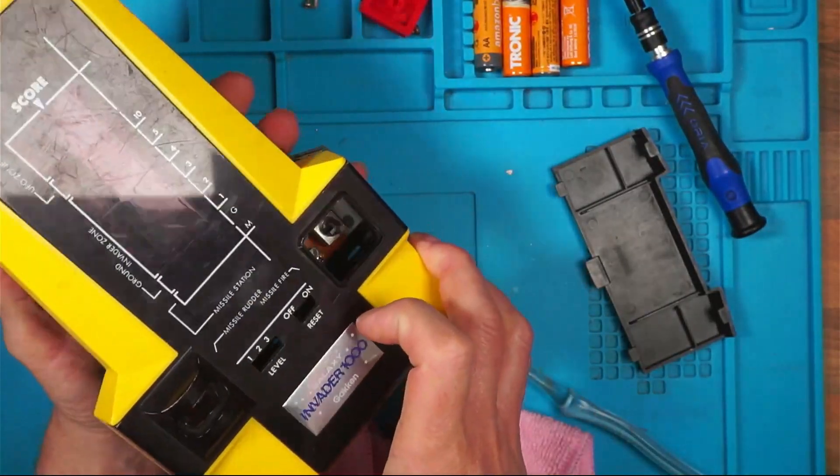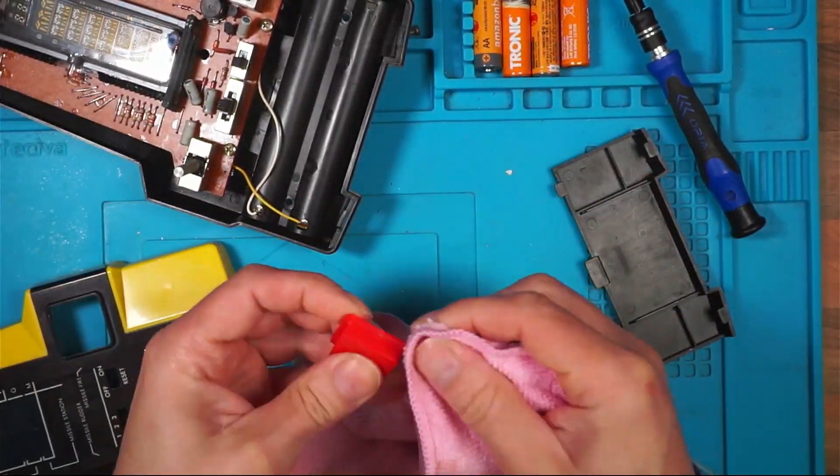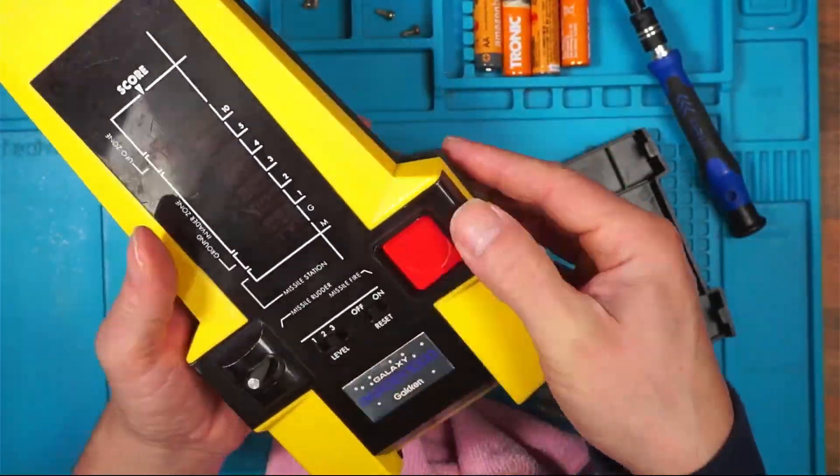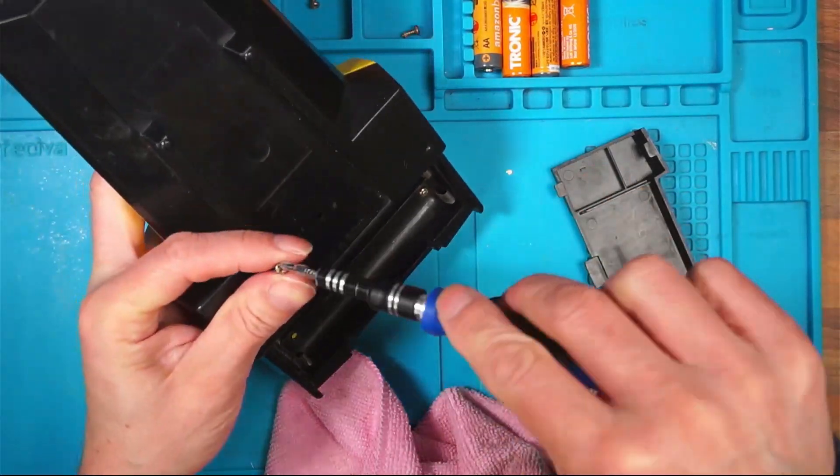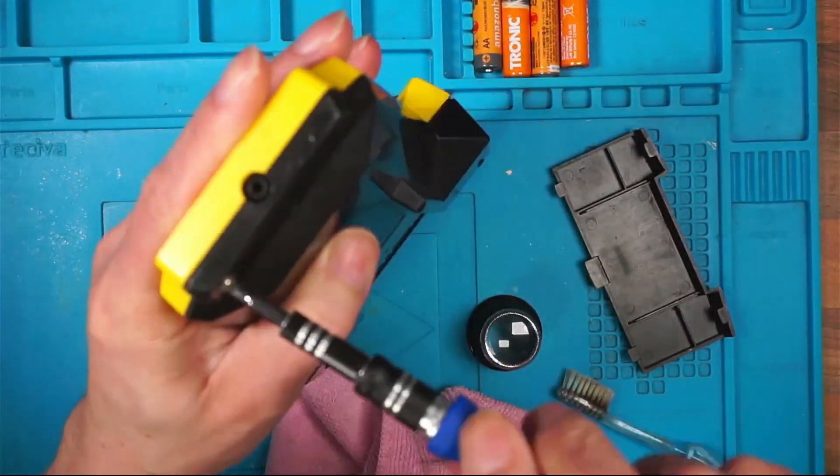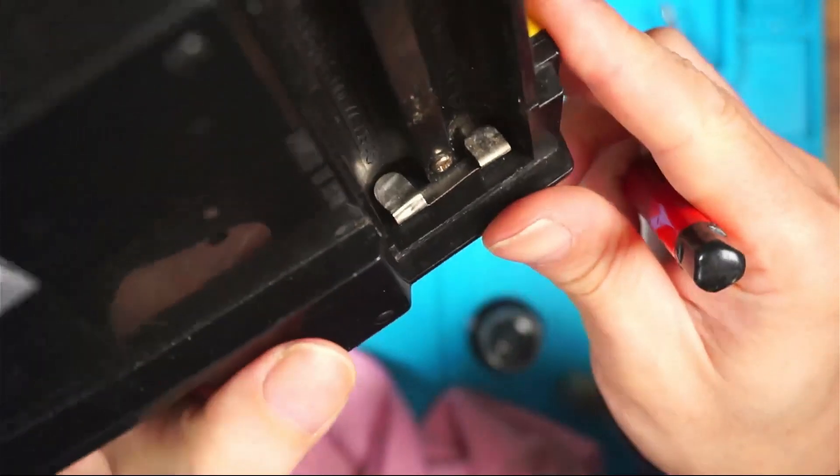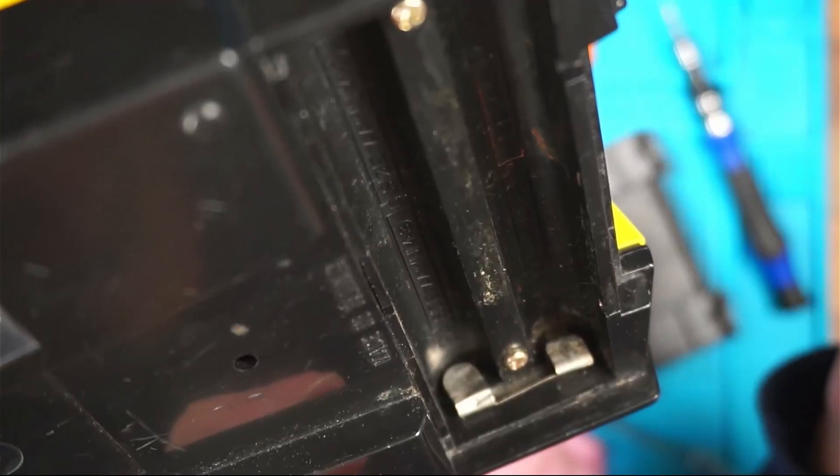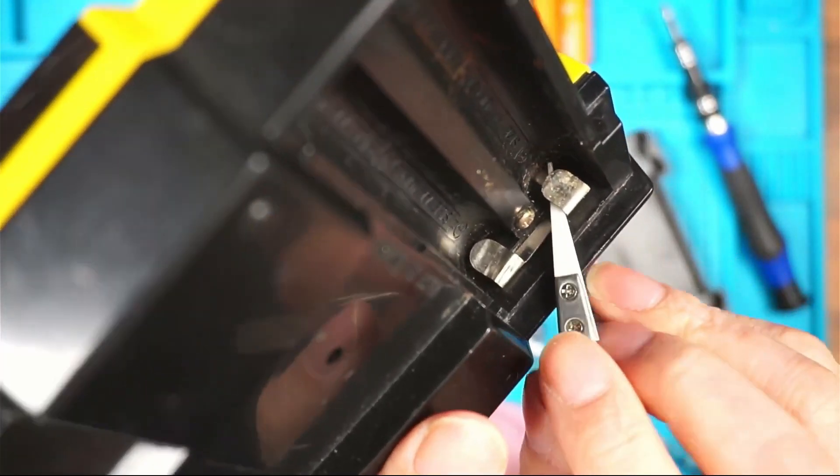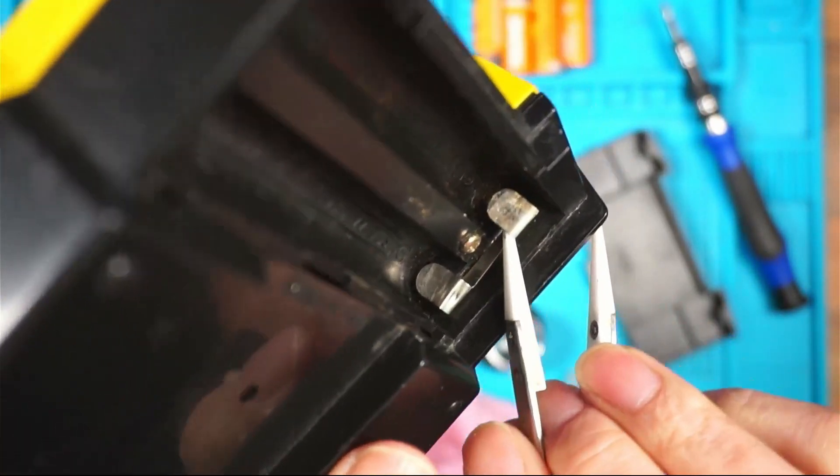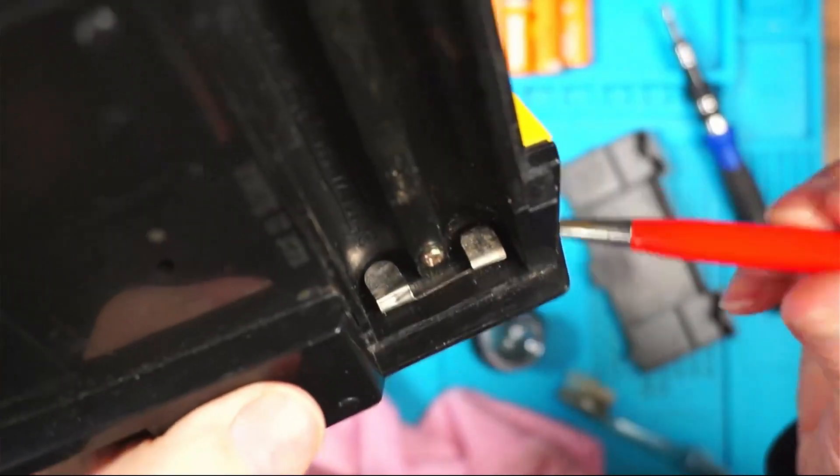Oh, hold on. Fire button. I'm assuming the battery contacts were why it didn't work for the seller. Now, I don't want to bend these too much in case they snap. See, that one's probably not got a great contact on. So, I'm just going to use this little fiberglass pen.